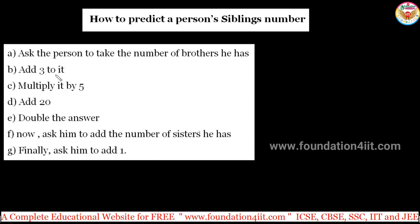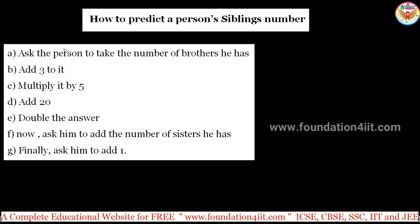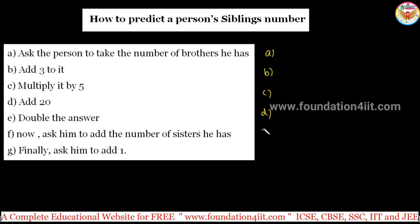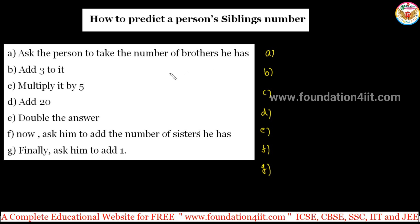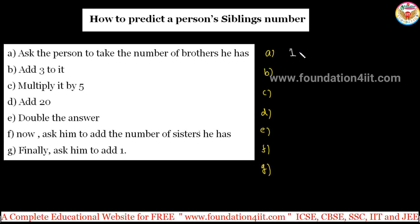Let us see these steps. First, ask the person to take the number of brothers they have. If there is no brother, just take zero; if there is no sister, take zero as well. Let me take an example to make it easy. I have one brother, so I take the number one. They do all the calculation in mind.